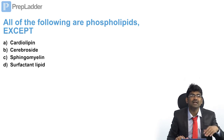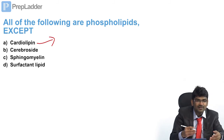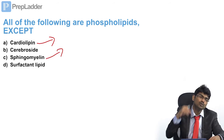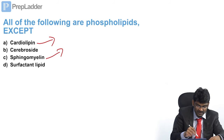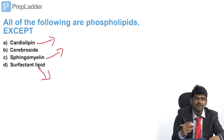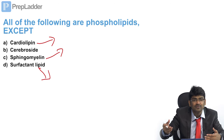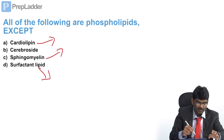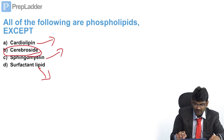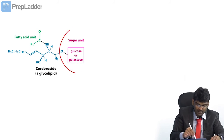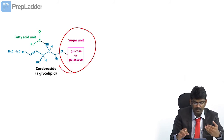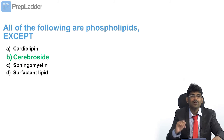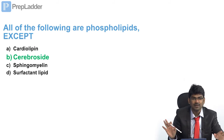All of the following are phospholipids except: cardiolipin (diphosphatidylglycerol) is a phospholipid; sphingomyelin is the only sphingophospholipid; surfactant lipid dipalmitoyl lecithin — lecithin is phosphatidylcholine, so there is a phosphate group. What is cerebroside? Cerebrosides have a sugar group and no phospho group. In cerebrosides you have sugar units — they can be glucocerebrosides or galactocerebrosides. The answer is cerebroside, which is not a phospholipid.